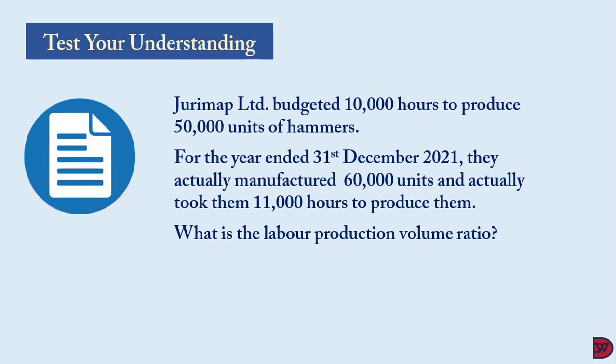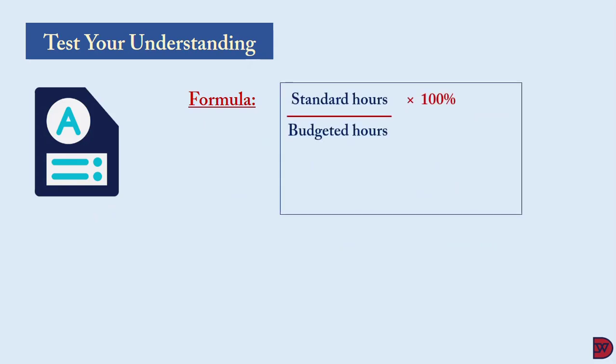Testing understanding: Jury Map Limited budgeted 10,000 hours to produce 50,000 units of hammers for the year ended 31 December 2021. They actually manufactured 60,000 units and it took them 11,000 hours. The labor production volume ratio formula is standard hours divided by budgeted hours, multiplied by 100 percent. Standard hours are 12,000, divided by 10,000, multiplied by 100, giving 120 percent.